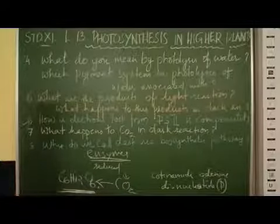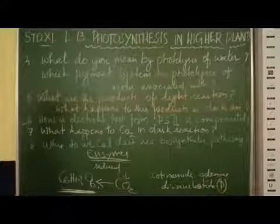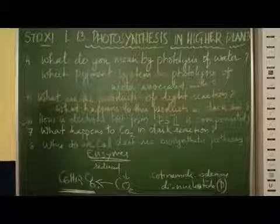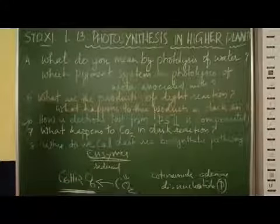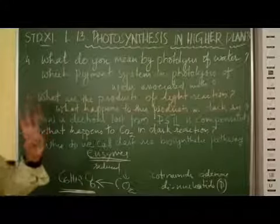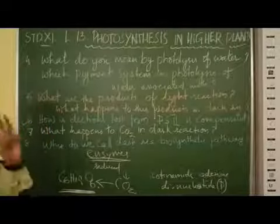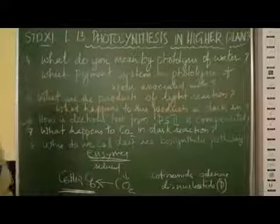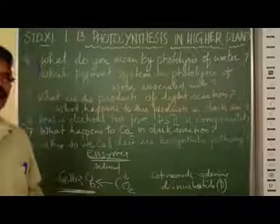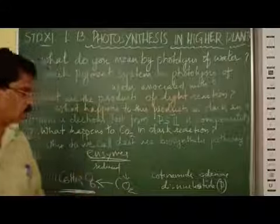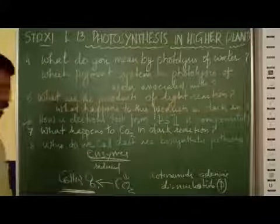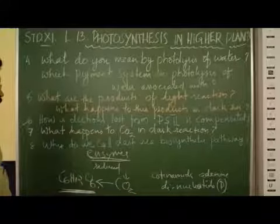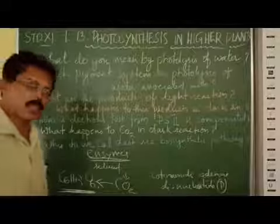So you can say particularly three steps: carboxylation of RuBP, then reduction of carbon dioxide, and regeneration of RuBP. So three steps are required for the production of glucose: carboxylation of RuBP, reduction of carbon dioxide, and regeneration of RuBP. These are controlled by many enzymes. Hence this dark reaction is called the biosynthetic pathway. That's all from this part. Thank you.